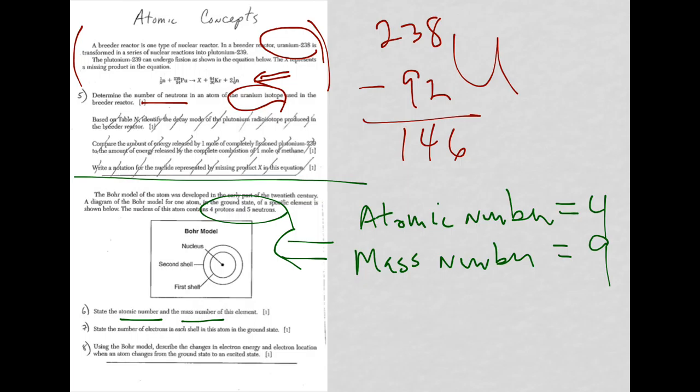Let's move on to question seven. State the number of electrons in each shell in this atom in the ground state. Well, if you don't have memorized the way the electrons would fill up the atom, and more than likely you don't, what you need to do is go and look at the periodic table.